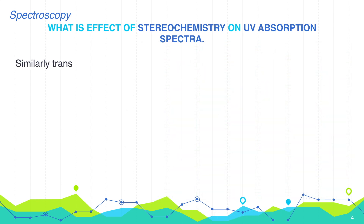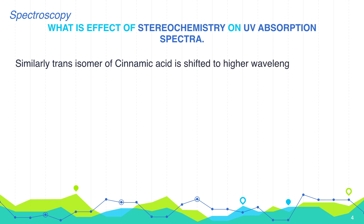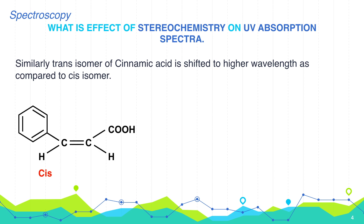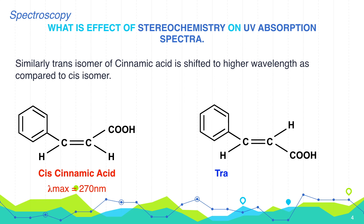Similarly, the trans isomer of cinnamic acid is shifted to a higher wavelength compared to the cis isomer. Cinnamic acid also has two bulkier groups: one phenyl and one carboxylic group. If both are on the same side of the carbon-carbon double bond, it is the cis isomer. Cis-cinnamic acid shows lambda max at 270 nanometers, while trans-cinnamic acid is shifted to 274 nanometers.